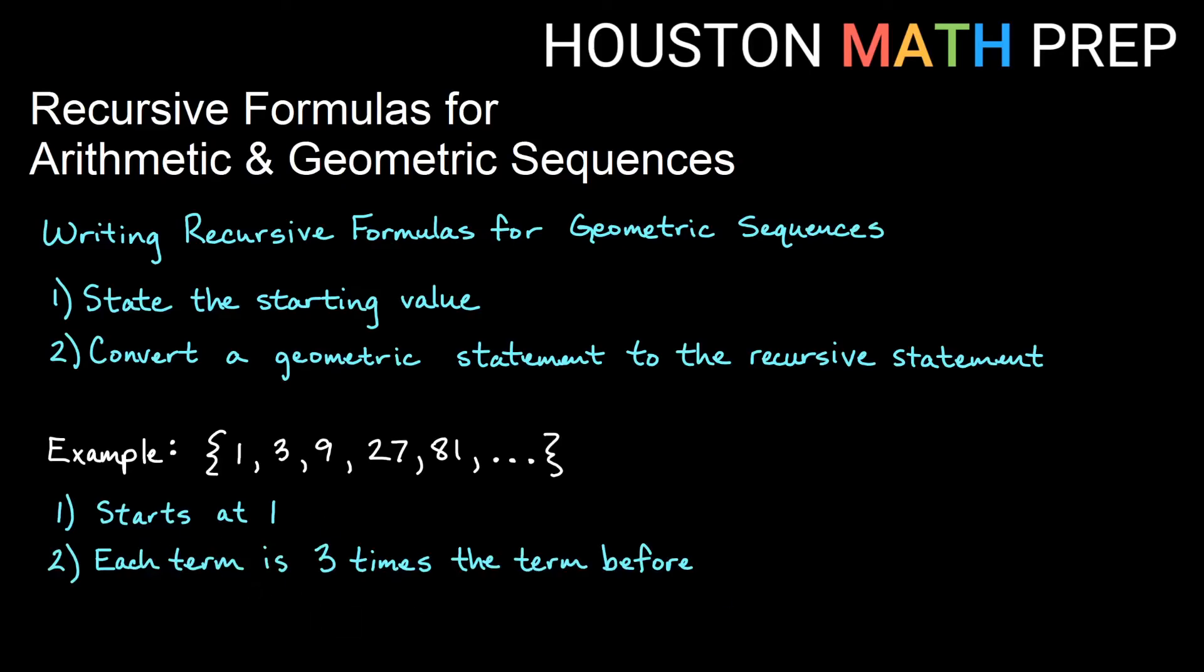Okay, so it starts at 1 means that a1 is 1. Each term tells me a sub n equals 3 times the term before, which is going to be 3 times a sub n minus 1. So we'll get a sub n equals 3 times a sub n minus 1. And that will be for the second term and beyond.